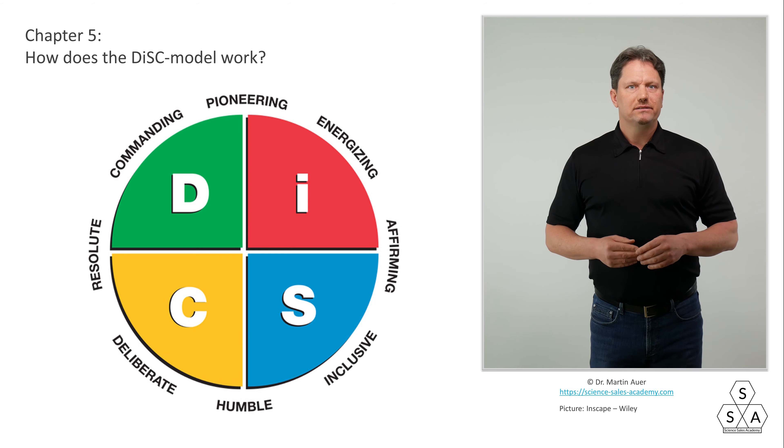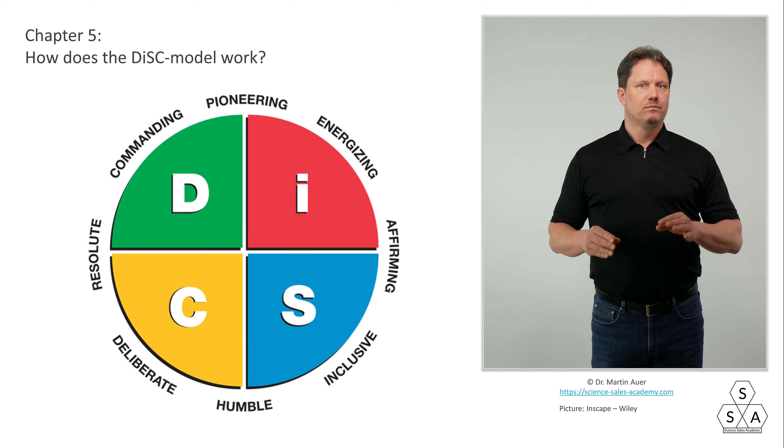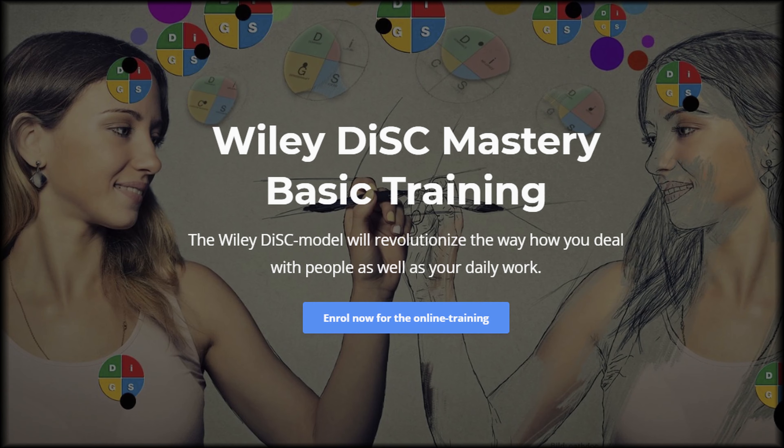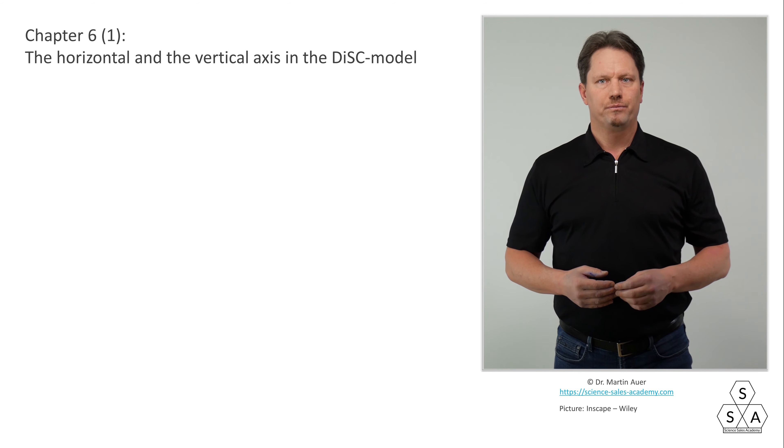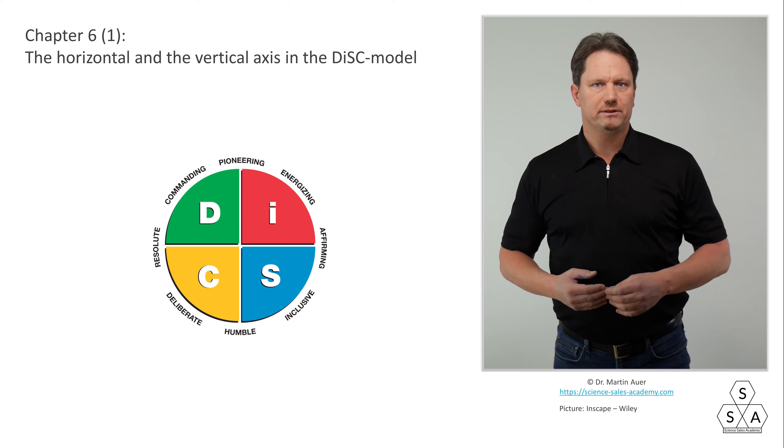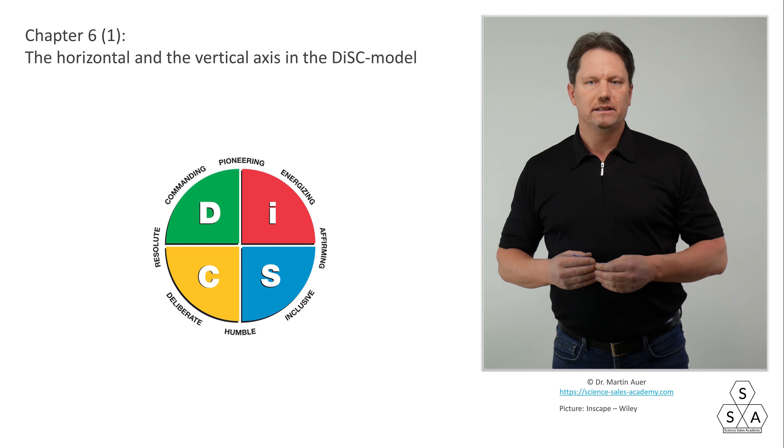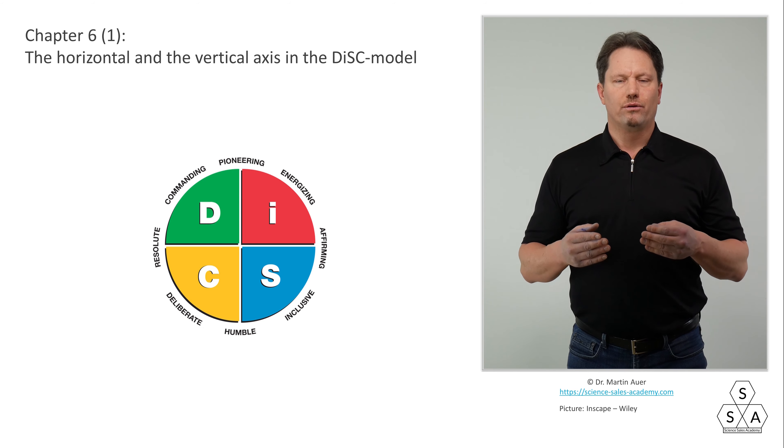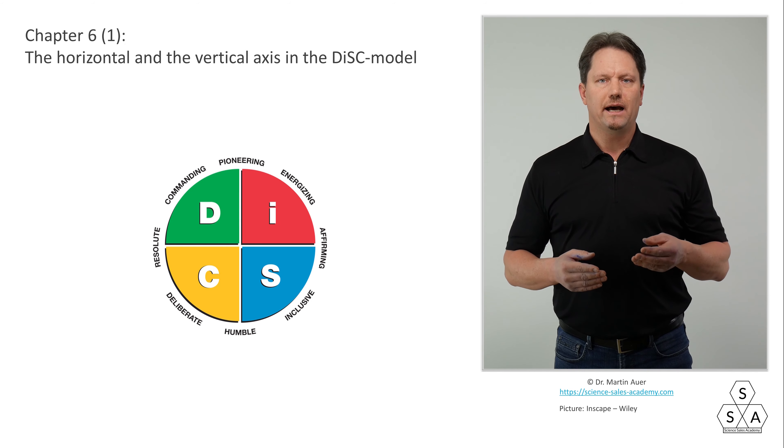Because also the mixed types are important. So, those are the four basic types of the Wiley DISC model in the four quadrants. So far, everything is simple and clear, right? Let's go one step further and explain the two axes, the horizontal axis and the vertical axis. We will do that in the next chapter. Chapter 6 Part 1: The horizontal and vertical axis in the DISC model. We have already discussed the four basic types with their respective characteristics. These four quadrants D, I, S and C are made up of two axes, the vertical and the horizontal one.